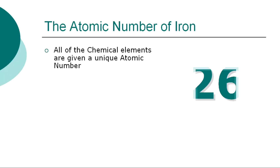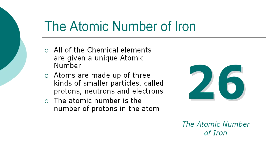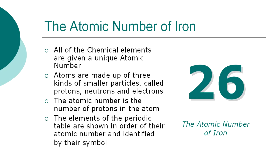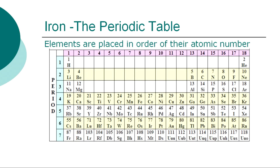All of the chemical elements are given a unique atomic number. Atoms are made up of three kinds of smaller particles, called protons, neutrons, and electrons. The atomic number is the number of protons in the atom. The chemical elements of the periodic table are shown in order of atomic number and identified by their symbol. The periodic table is a chart showing the symbols and the atomic numbers of all known elements, such as iron, in one large grid. The chemical elements of the periodic table are placed in order of their atomic numbers.